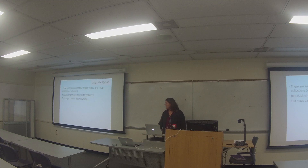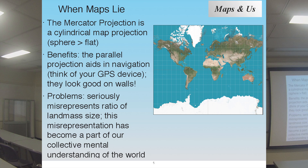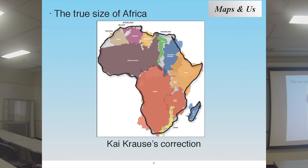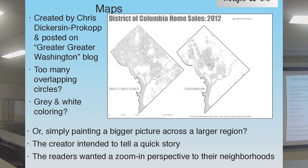Of course, maps can't do everything. A couple of well-known issues come up. One is the Mercator projection problem — the attempt to force a spherical dimension onto a flat surface — which results in a skewing and misrepresentation of the ratio of land masses or water masses. Some people have argued this can filter into our mental understanding of the world, with certain countries mistakenly viewed as larger and perhaps more powerful than they actually are.